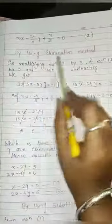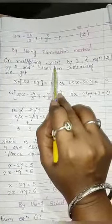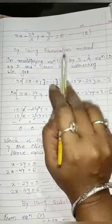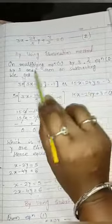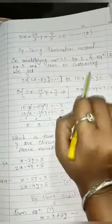By using Elimination Method. In Elimination Method, first we choose which variable we want to eliminate and equilibrate both the variable. On multiplying equation 1 by 3, equation 2 by 5.